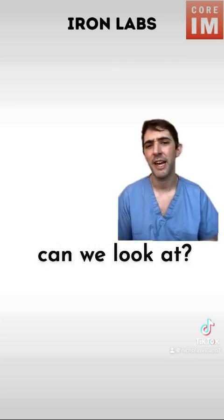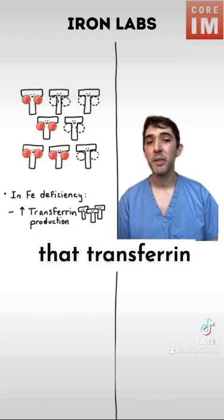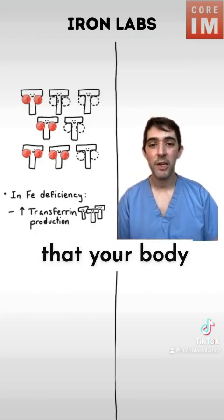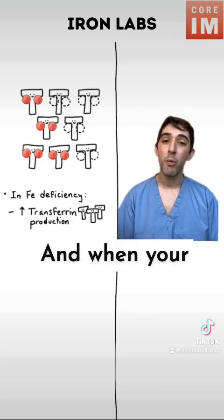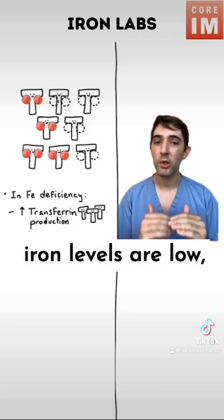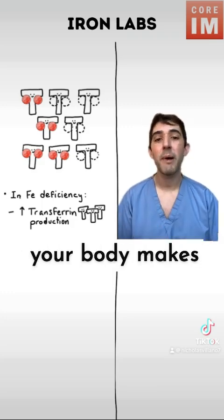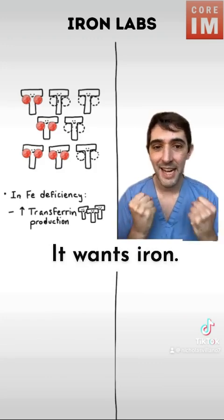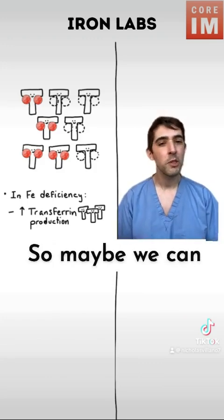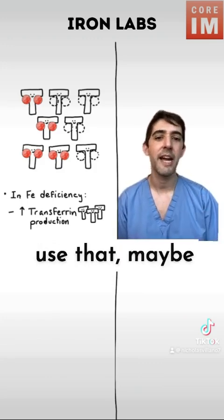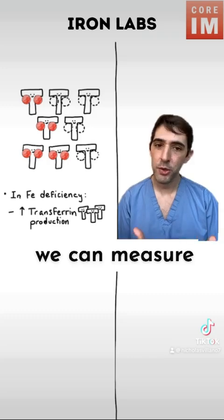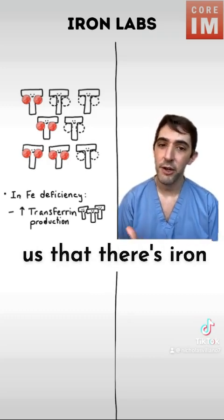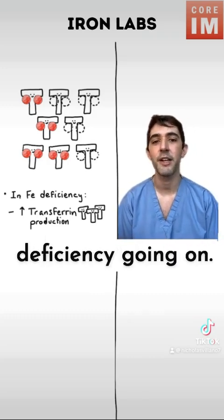So what else can we look at? Remember that transferrin is the main way that your body moves iron around. And when your iron levels are low, your body makes more transferrin — it wants iron. So maybe we can use that. Maybe we can measure transferrin, and if it's high, that might tell us that there's iron deficiency going on.